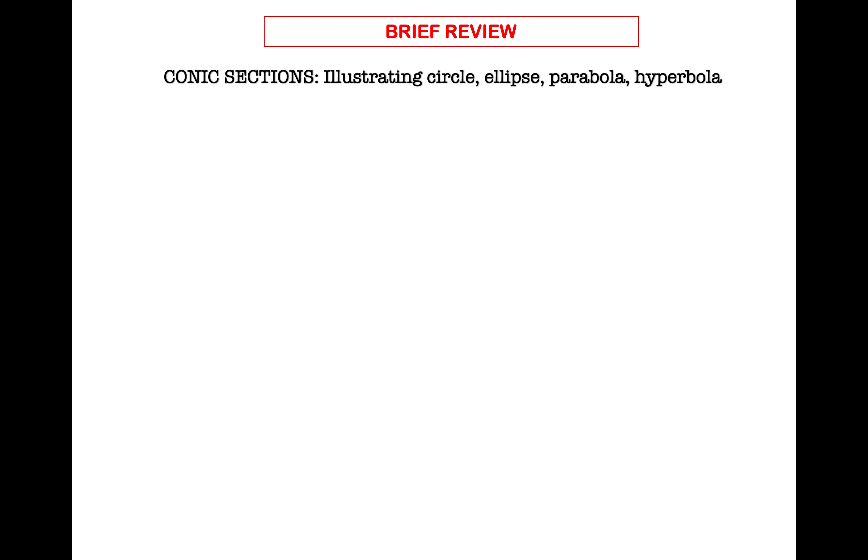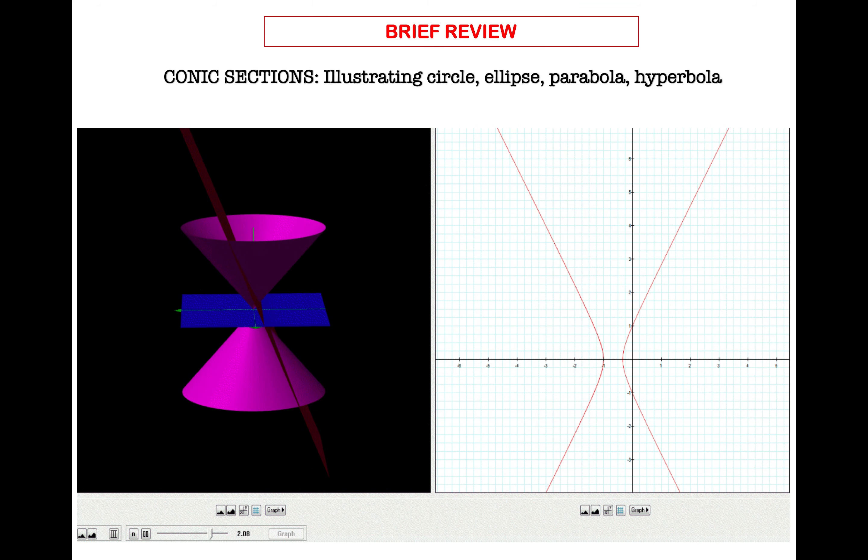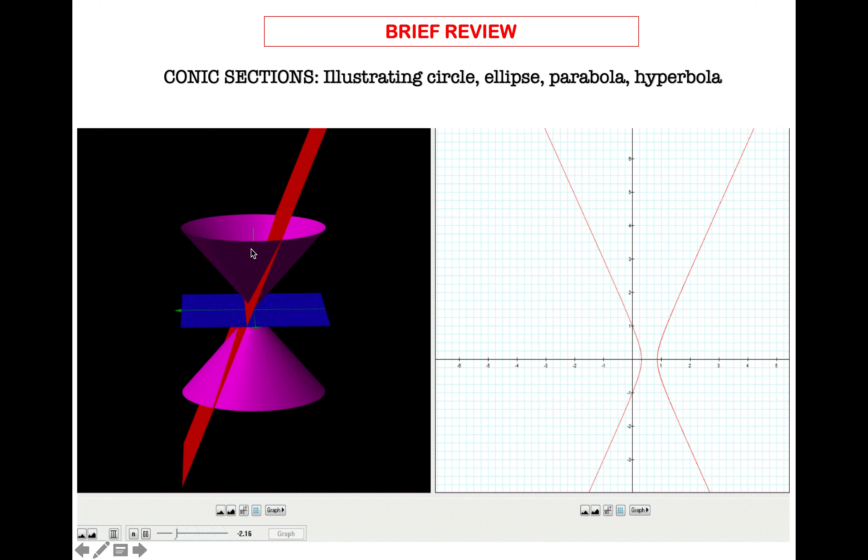So today, we will look at the shapes and figures drawn or generated by the cutting plane with respect to the cone. So to help you visualize, here is an animation of how it looks like. So you had a right circular cone composed of two naps, nap one, nap two, and this blue figure here is your cutting plane.